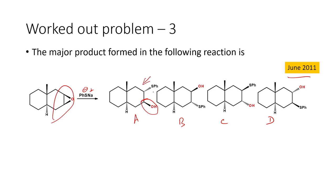The incoming nucleophile attacks from the bottom side. In one case the nucleophile attacks from one carbon, and in another case from the adjacent carbon. In the other two options, the attack is from the opposite side from two different carbon atoms. That is how we have four different types of product that may be formed. We have to find out which reaction actually occurs.